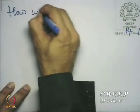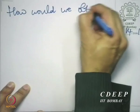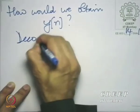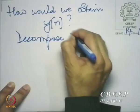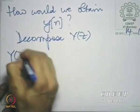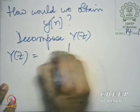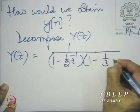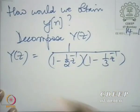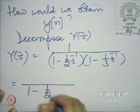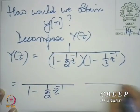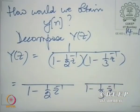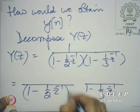One would use what is called a partial fraction expansion. How would we obtain y(n)? Decompose Y(z). Now, Y(z), which is 1 by (1 minus half z-inverse) times (1 minus one-third z-inverse), can be decomposed as something on (1 minus half z-inverse) and something upon (1 minus one-third z-inverse). What upon each?